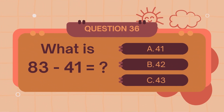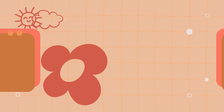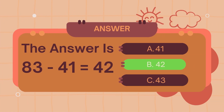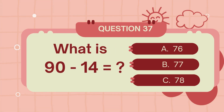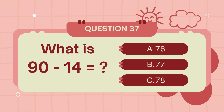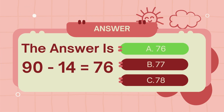What is eighty-three minus forty-one? The answer is forty-nine. What is ninety-nine minus forty-nine? The answer is seventy-six.